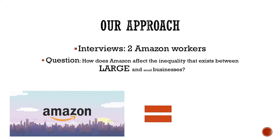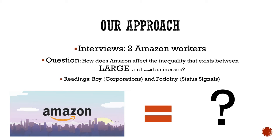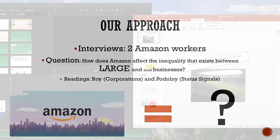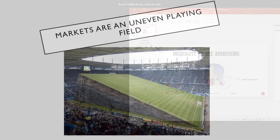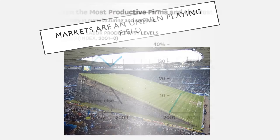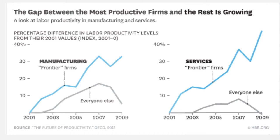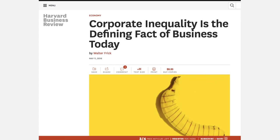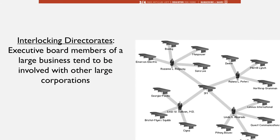The readings we focused on for our project are William Roy's reading, which is about how big companies or corporations have advantages over small companies, and the Status Signals reading by Joel Podolny. As a general concept learned through multiple examples in class, markets are an uneven playing field. An existing market inequality resides between large and small companies where powerful corporations and already successful businesses continue to thrive and expand, while smaller companies and startups face an upward battle towards recognition and success.